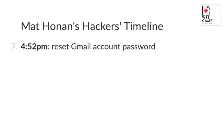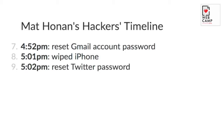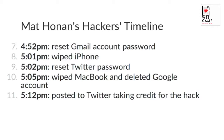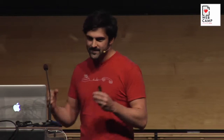So they broke the Apple account, and at 4:50 p.m. that got reset. At 4:52 they reset the Gmail account password. At 5:01 they wiped his iPhone — at which point he probably started to figure out something was going wrong. At 5:02 they reset his Twitter password and started to post really weird things — homophobic and racist stuff. At 5:05 they wiped his MacBook and deleted his Google account. And then at 5:12, weirdly enough, after posting the strange things on Twitter, they took credit for it. Horrifying.